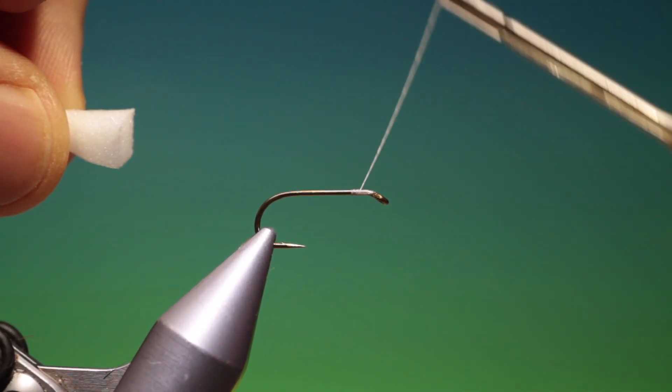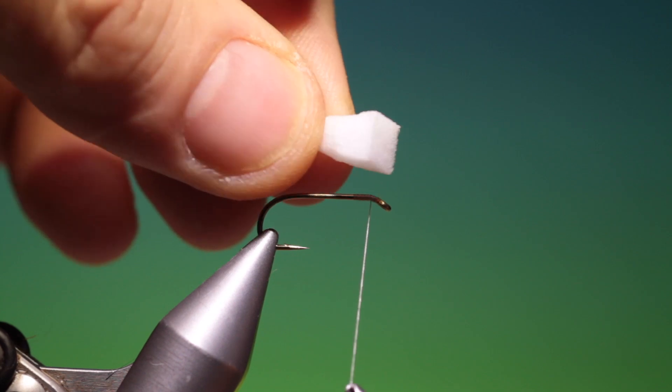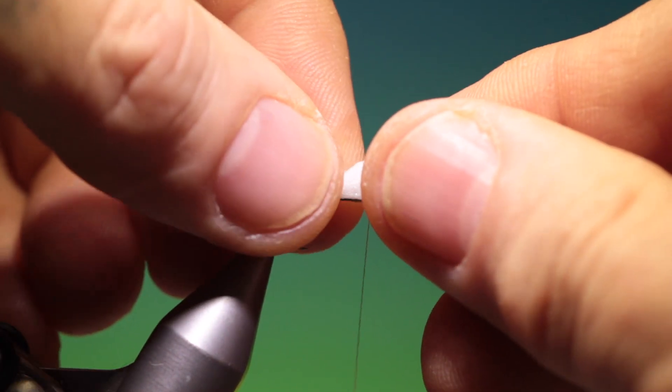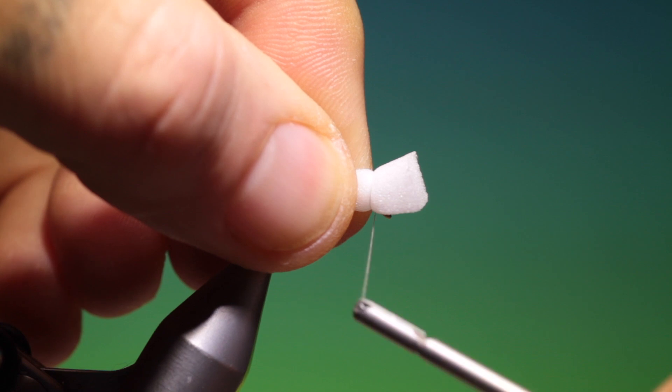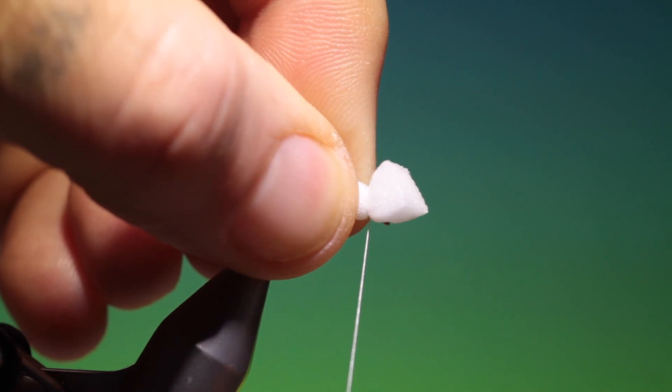Then we'll move our tying thread back to the front, put our sugar cube on, round a couple of times, tighten in.